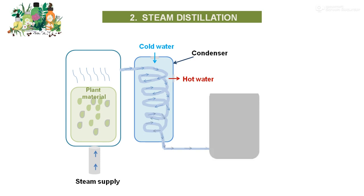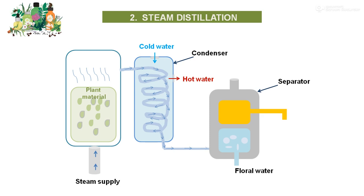In this way, the collected vapor form is again passed through the condenser, and when it passes through for the required period of time, it collects into the separator. Here, the total essential oil collects in the upper portions, and the floral water is obtained at the lowermost part of the separator.